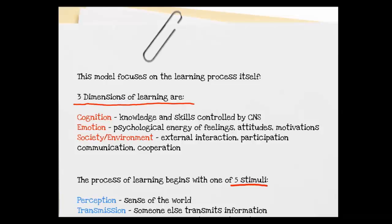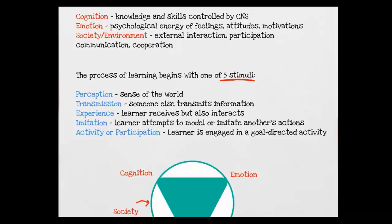The process of learning begins with one of five stimuli: perception, which is our sense of the world; transmission, where someone else transmits information to us; experience, whereby the learner receives but also interacts with the environment; imitation, where we attempt to model or imitate another's actions; and finally, activity of participation, where the learner is engaged in a goal-directed activity.